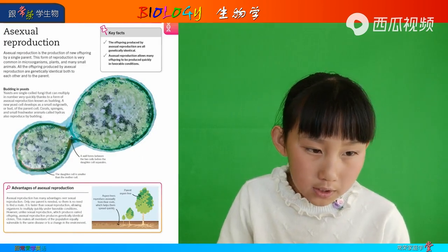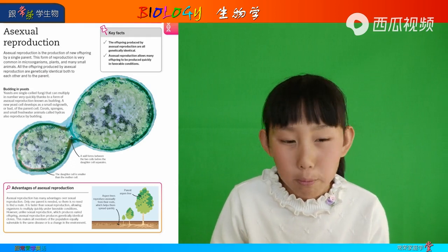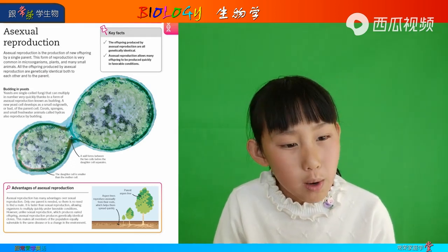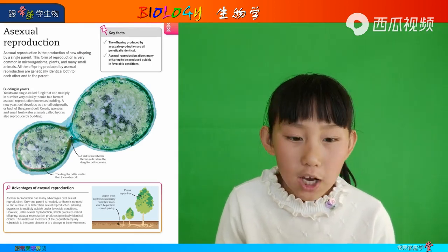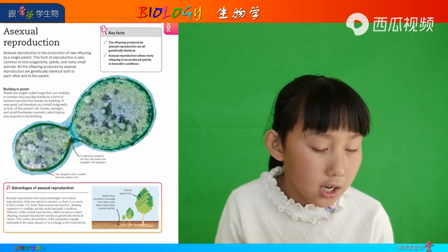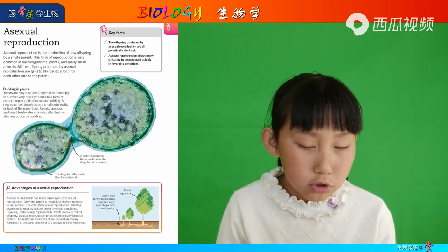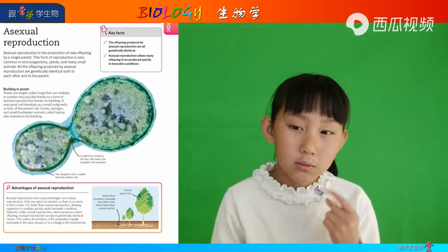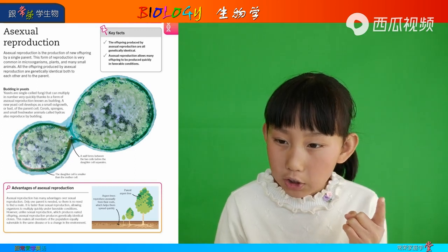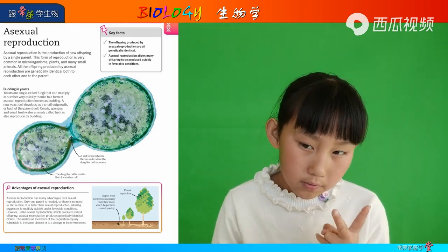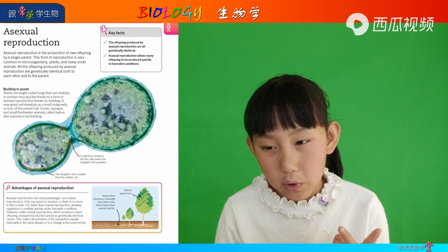Asexual reproduction is the production of new offspring by a single parent. This form of reproduction is very common in microorganisms, plants, and many small animals. All the offspring produced by asexual reproduction are genetically identical, both to each other and to the parent. The offspring produced by asexual reproduction are all genetically identical, and asexual reproduction allows many offspring to be produced quickly in favorable conditions.